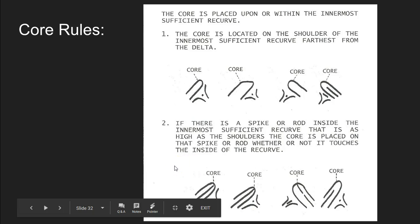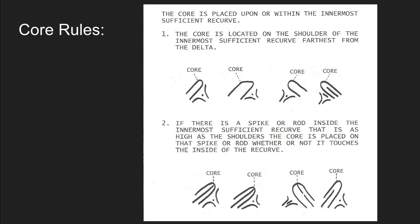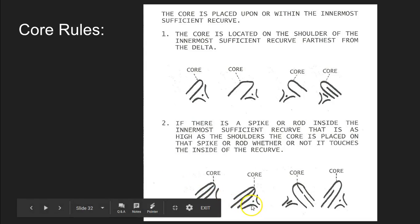Now what if your innermost recurve has a spike on the inside of it? If there is a spike or what we call a rod on the inside of the innermost recurve, then the core is placed on the end of that spike or rod. So here we have our type line and our other type line, so here's our point of divergence and our delta. On this recurve we have a spike or rod here, and so instead of putting the core on one of the shoulders we put the core on the end of that spike.